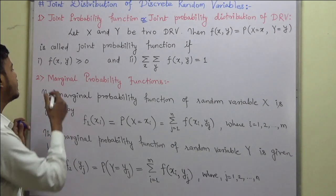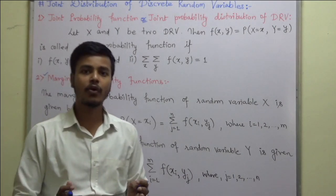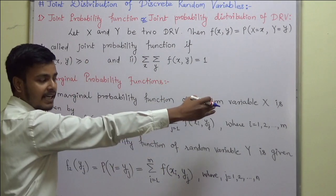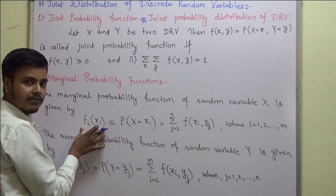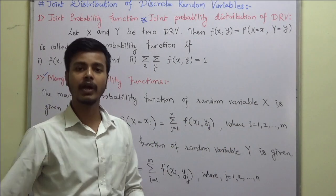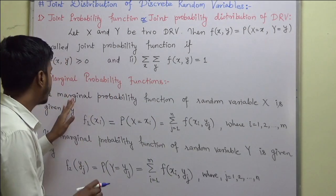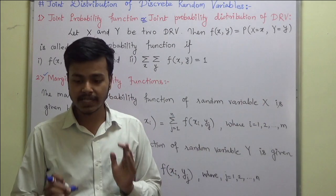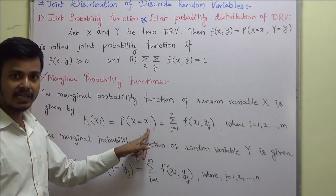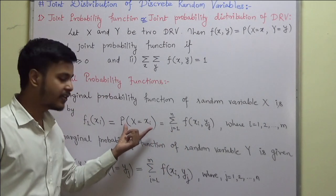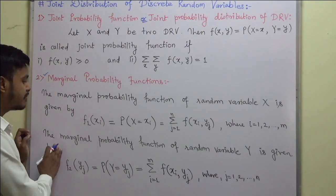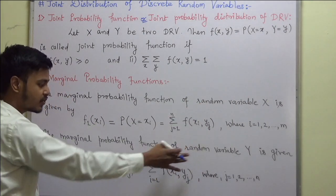This is new to you: the marginal probability function. The marginal probability function will be for the two variables x and y. The marginal probability function of random variable x is denoted by f1(xi) and is given by the summation over j from 1 to n of f(xi, yj), where i goes from 1 to n. In other words, the marginal probability function of x can be obtained by adding all the entries corresponding to xi. Likewise, you can find the marginal probability function for random variable y.